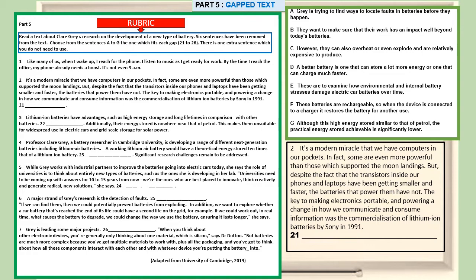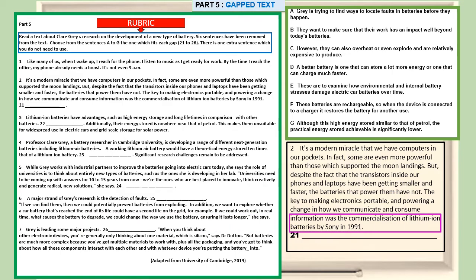Paragraph 2 is a continuation from paragraph 1. Let's look at the last sentence before the gap: 'The key to making electronics portable and powering a change in how we communicate and consume information was the commercialization of lithium-ion batteries by Sony in 1991.' It talks about lithium-ion batteries, so we can predict the following sentence will probably be about lithium-ion batteries — maybe a brief explanation or description. Looking at options A to G, the most appropriate answer that gives us additional information about lithium-ion batteries will be option F.